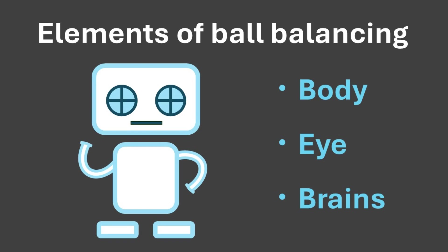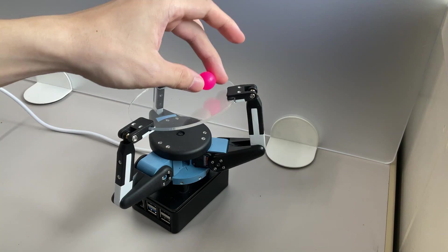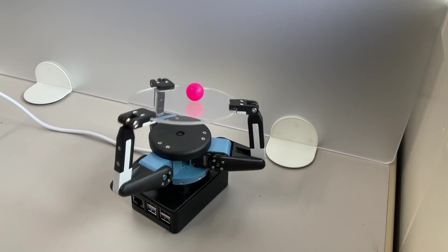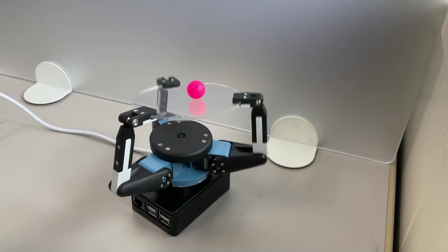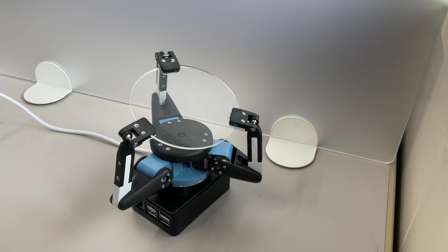Now, all the elements necessary for a ball balanced robot are in place. All that remains is to patiently adjust the PID gains through repeated testing. As a result of continuous adjustment, the robot is now able to successfully balance the ball as shown here.